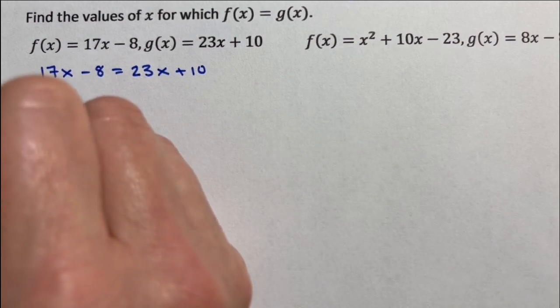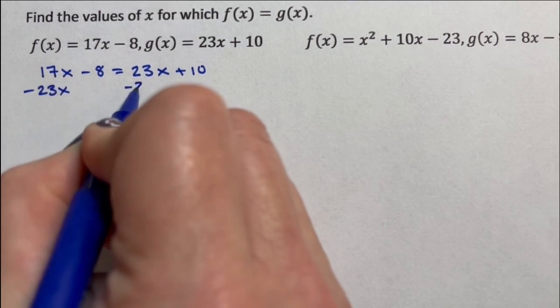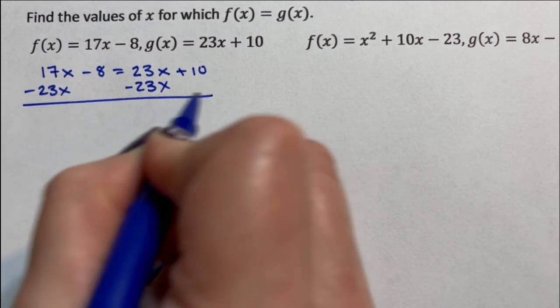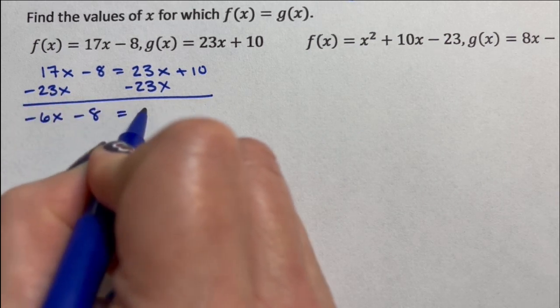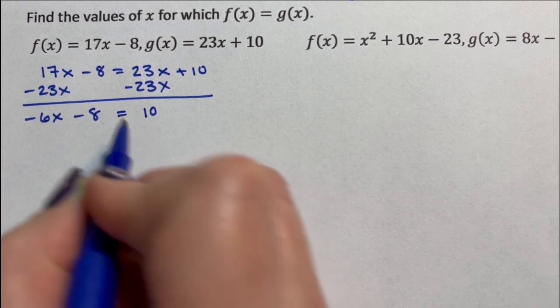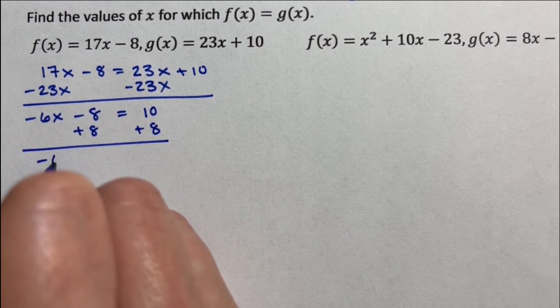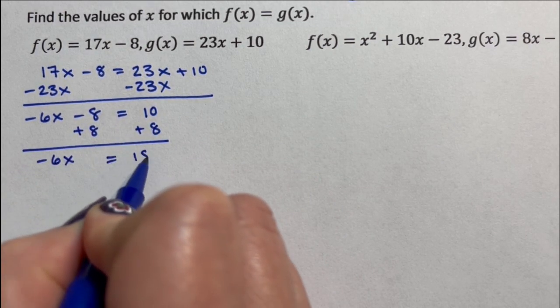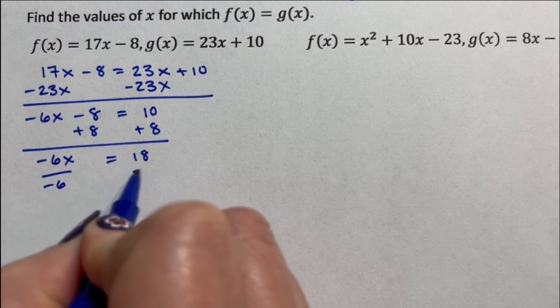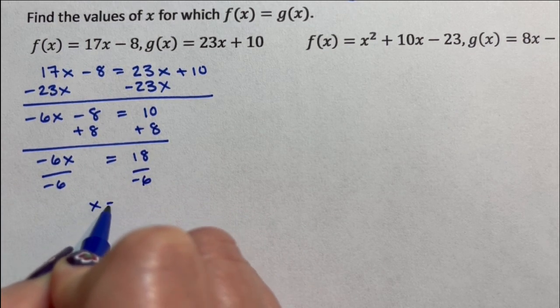I subtract 23x from both sides and I get negative 6x minus 8 equals 10. I add 8 to both sides. Negative 6x equals 18. I divide by negative 6 and x is equal to negative 3.